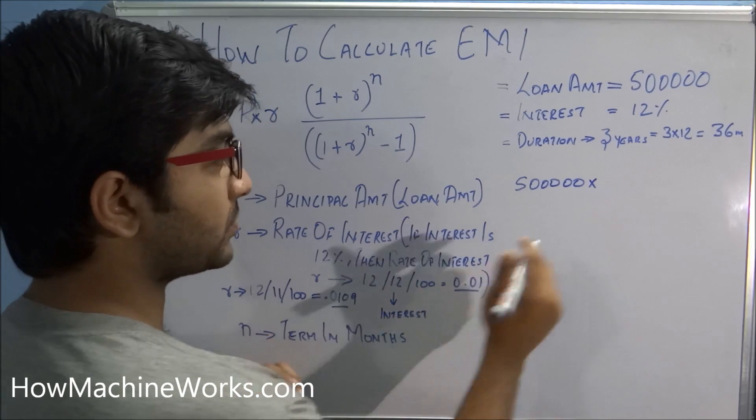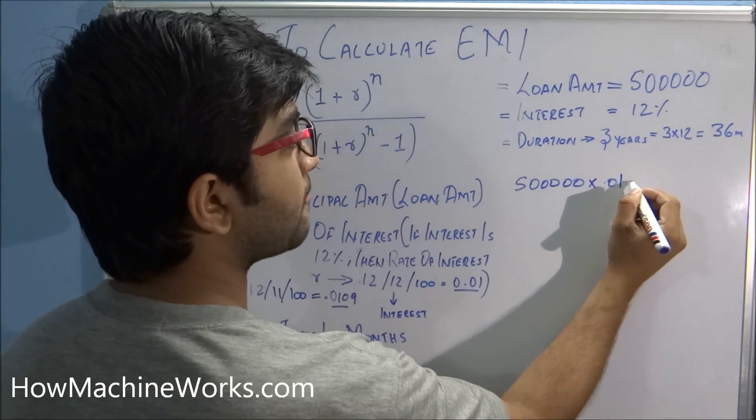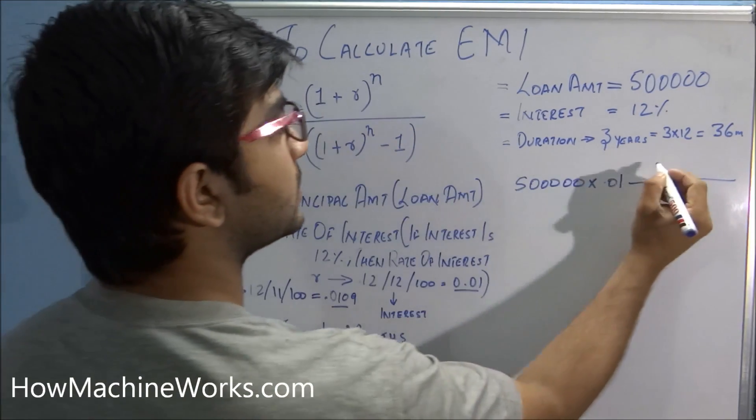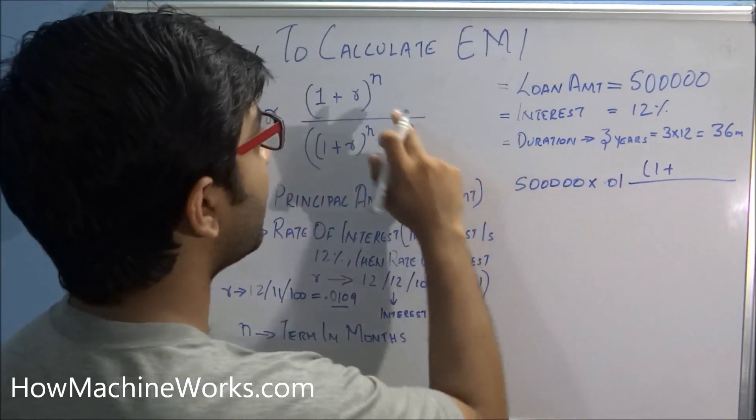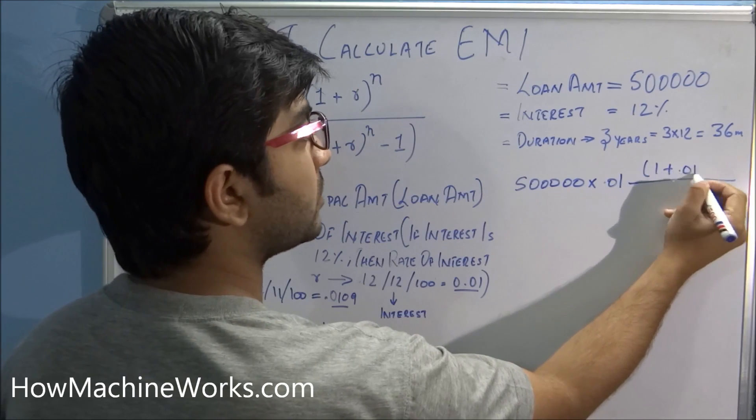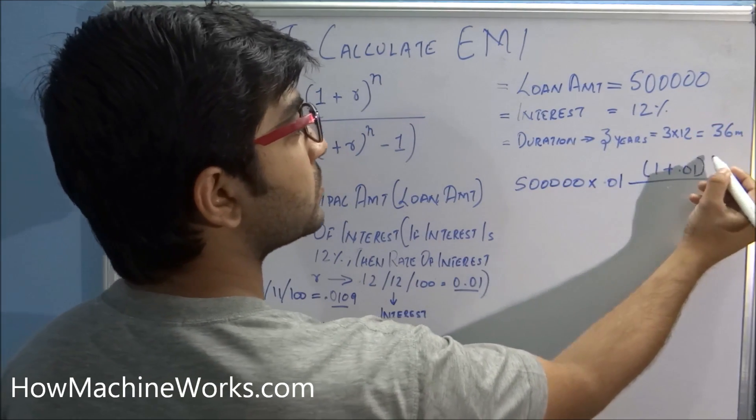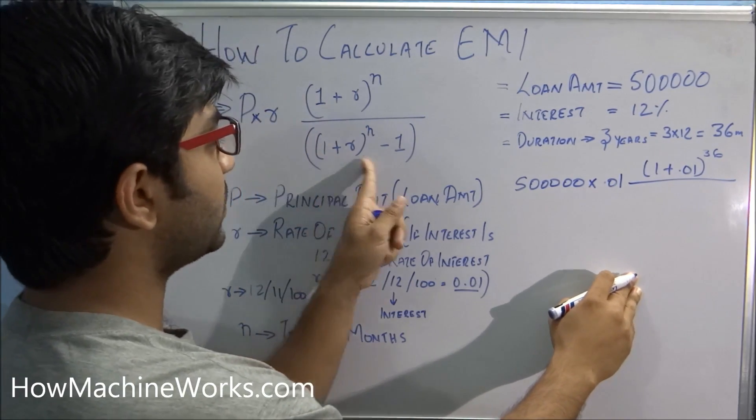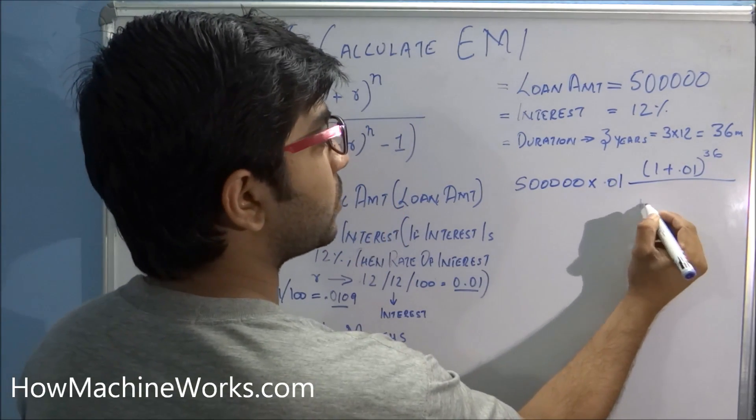The whole multiplied by (1 + R), that is 0.01, the whole raised to 36 months. Now it's divided by, here you can see, (1 + R) again coming, so (1 + 0.01) the whole raised to 36 minus 1 over here.